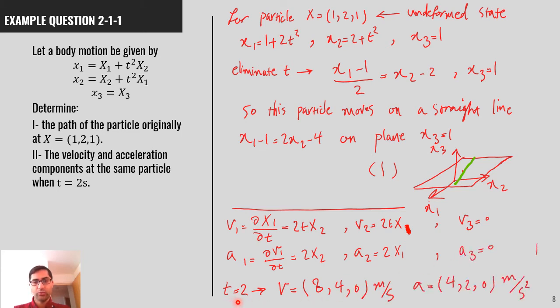So, by just replacing t equal to 2 in the above relations, we get V equal to 8, 4, 0, a vector, meter per second, and A equal to 4, 2, 0, meter per square second. So, pay attention that we substituted t equal to 2 here, and X1, capital X1, capital X2, capital X3, based on the given location of the particle, 1, 2, 1. And it resulted in the velocity and acceleration of the particle.